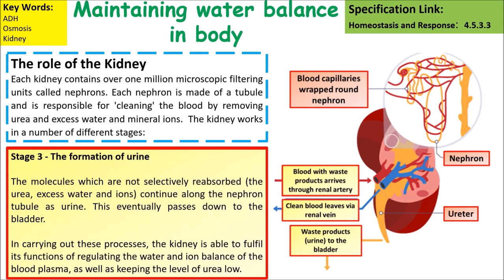Stage three is the formation of urine. The molecules that are not selectively reabsorbed will continue along the nephron tubule as urine and eventually pass down into the bladder.